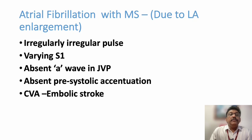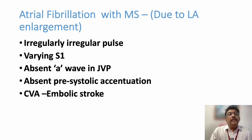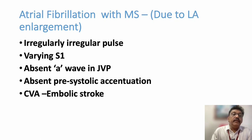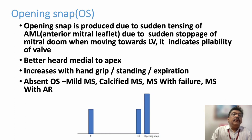Atrial fibrillation with mitral stenosis is a common complication due to left atrial enlargement. Findings include irregularly irregular pulse, irregularly irregular QRS complexes on ECG, varying S1 (instead of the usual loud S1), absent 'a' wave in JVP, and absent pre-systolic accentuation — because atrial fibrillation removes the atrial booster kick. Embolic strokes are very common in atrial fibrillation.